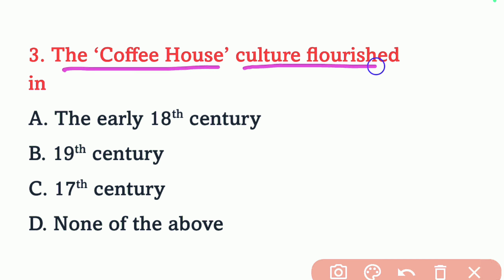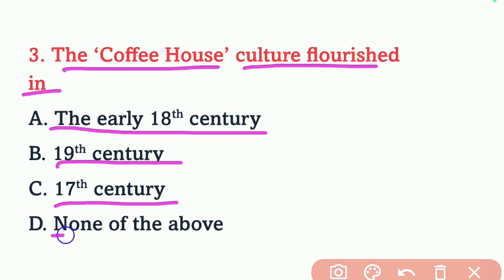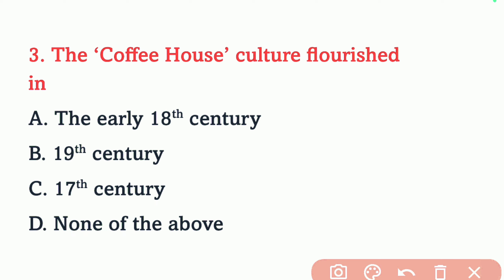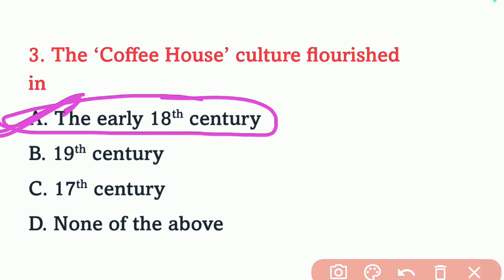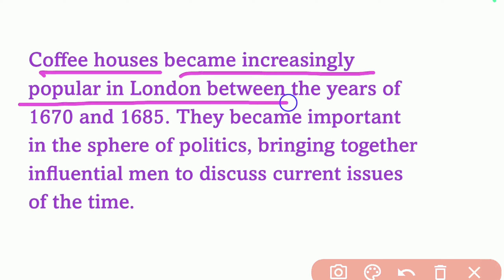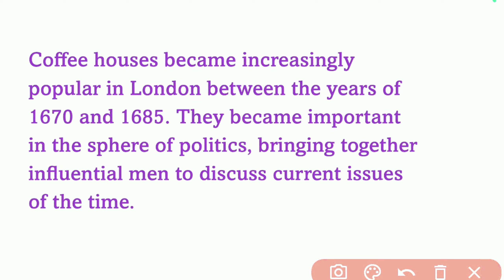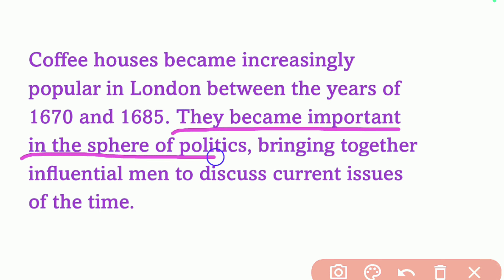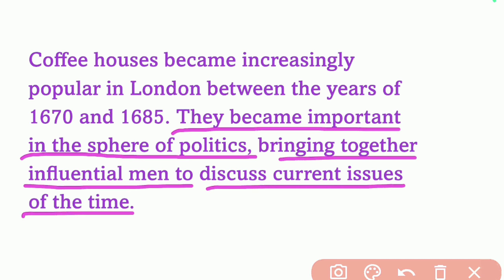Question number 3. The coffee house culture flourished in the early 18th century, 19th century, 17th century, or none of the above? The correct answer is the early 18th century. Option A is the right answer. Coffee houses became increasingly popular in London between the years 1670 and 1685, becoming important in the sphere of politics, bringing together influential men to discuss current issues of the time.